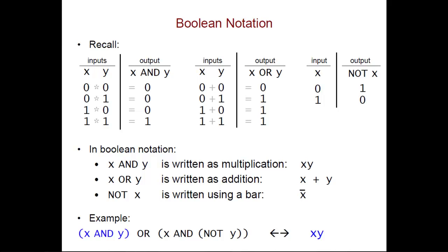Then I use a plus for the OR. The second thing that's being ORed is x AND NOT y. So I'm using multiplication for the AND, and I'm using a bar for the NOT.